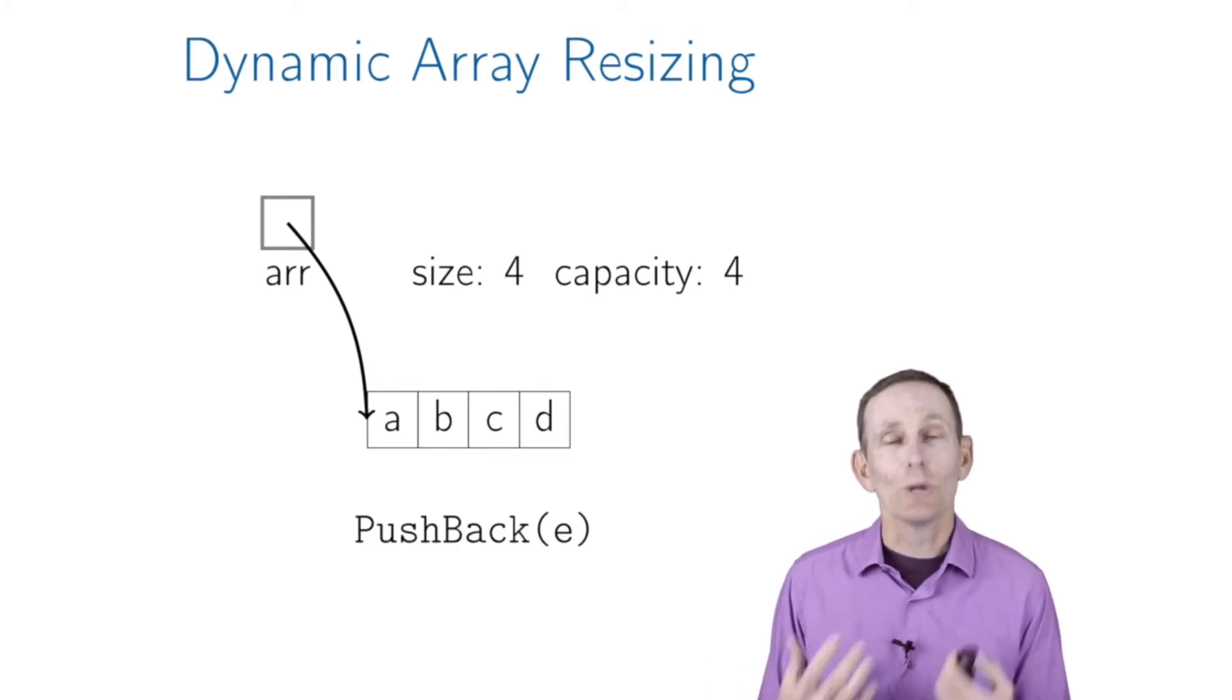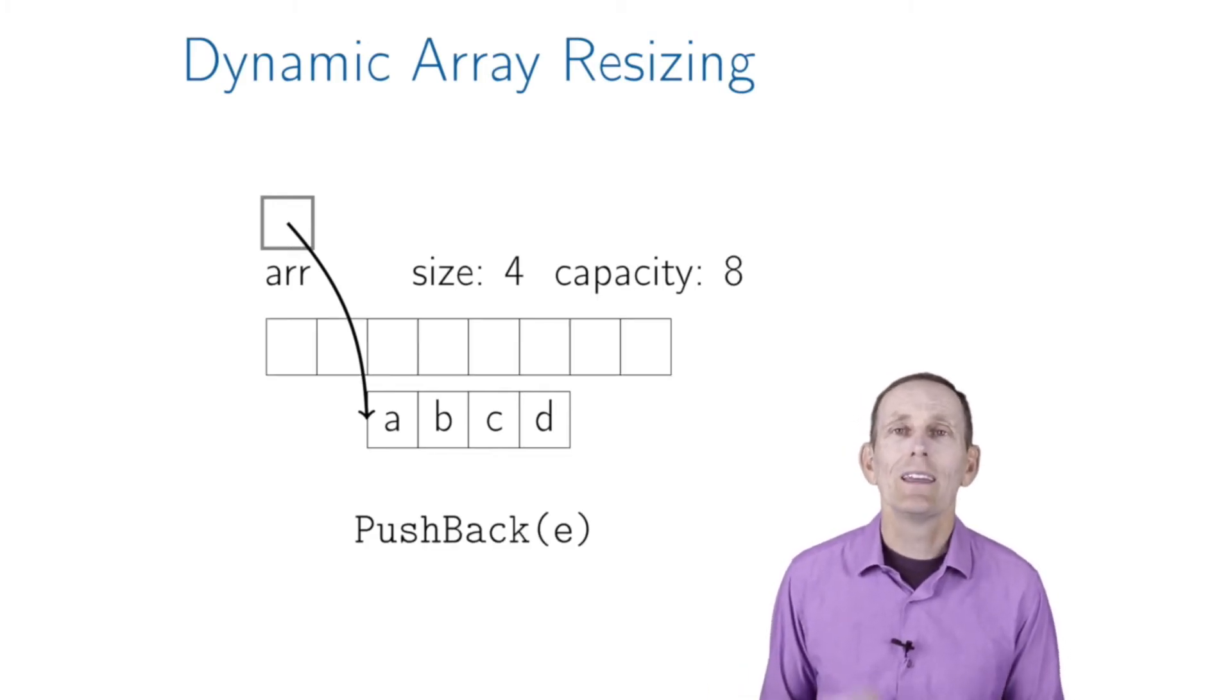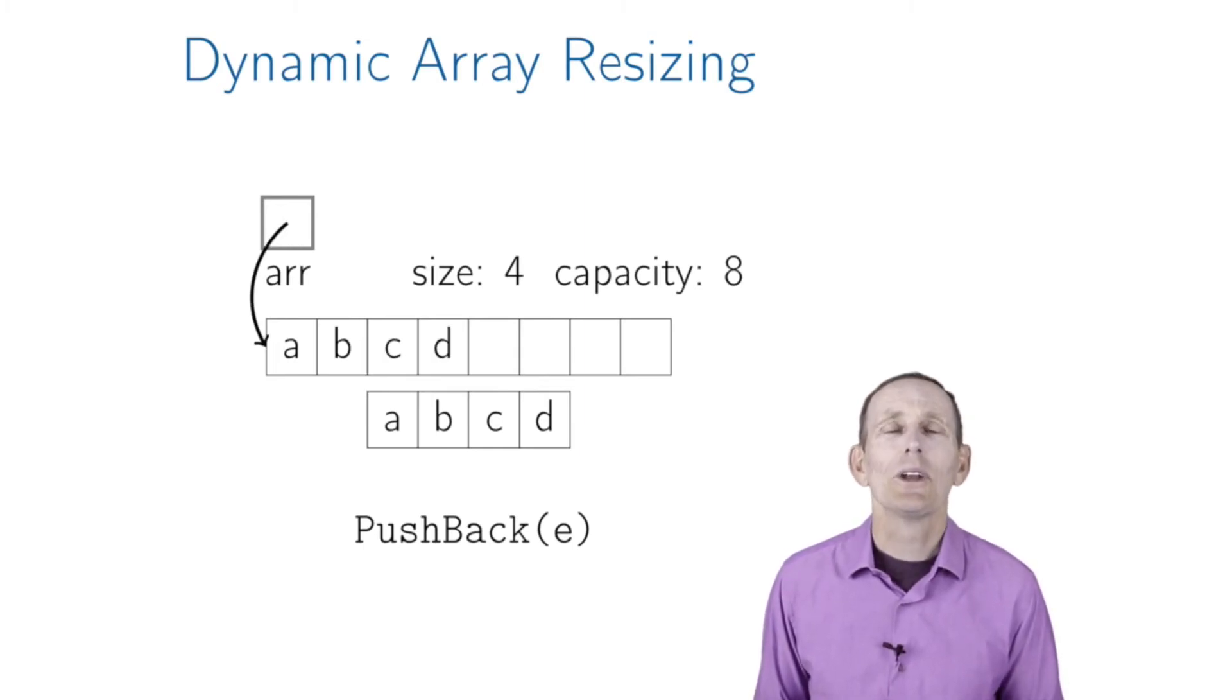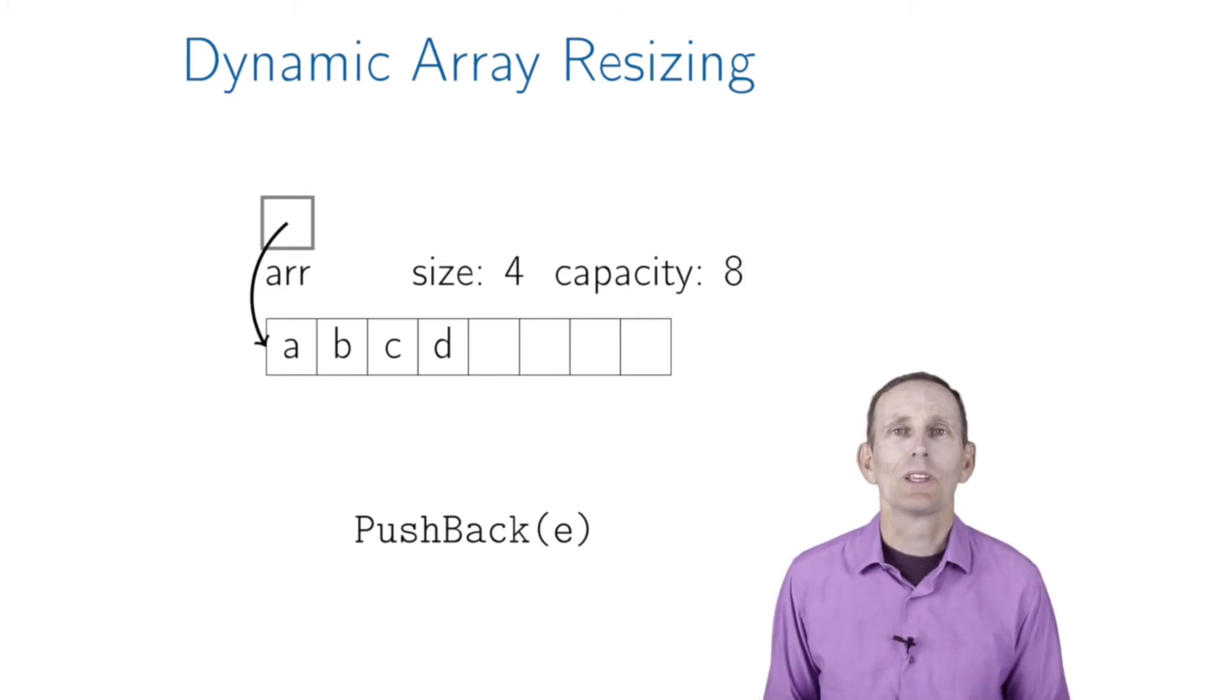We allocate a new array - in this case, size 8. We'll talk about how you determine that size later. Then copy over a, b, c, and d, update the array pointer, deallocate the old array, and now we have room - we can push in 'd'. That's how dynamic arrays work.